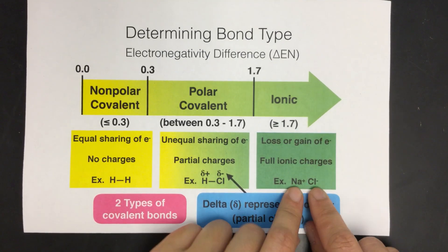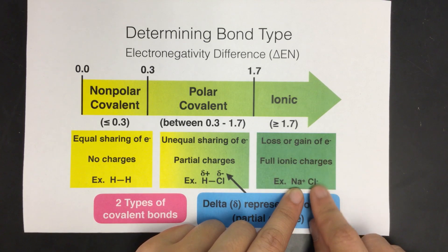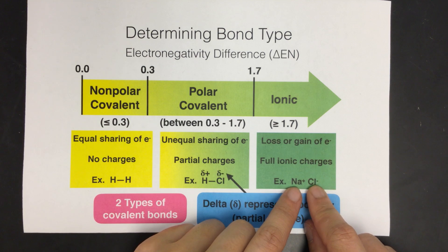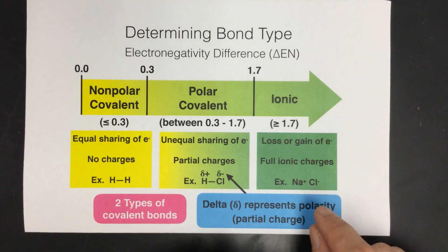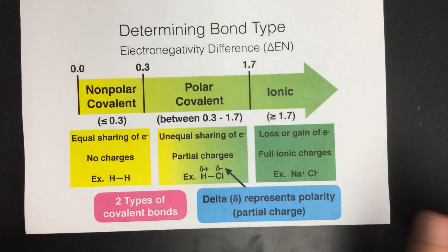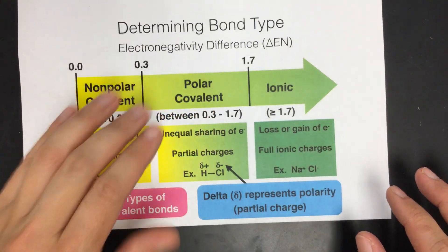On ionic bonds, since one atom just totally takes the electron — a total loss or gain of electrons — you have full charges. So if chlorine takes the electrons from sodium, it's going to have a negative charge and sodium will have a positive charge. Just keep in mind there are two types of covalent: they're both sharing, but one's equal sharing and one's unequal sharing.